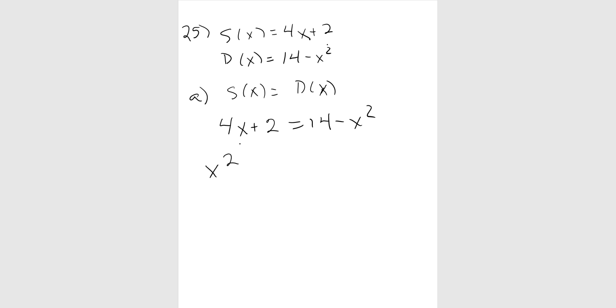I have 4x plus 2 for my supply, and I have 14 minus x squared as my demand. Since this is a quadratic, I want to move everything to the left side, set it equal to 0. So the x squared comes over positive, the 4x stays positive, the 14 comes over so I have 2 minus 14 is negative 12, equal to 0. I'm going to factor this. Factors of 12 that will give me 4 would be 6 and 2, so x minus 2 times x plus 6. This says x is 2 and x is negative 6. I got two answers, which one makes sense? Only the positive one makes sense. I can't sell negative items. So the number of items sold in market equilibrium is 2.